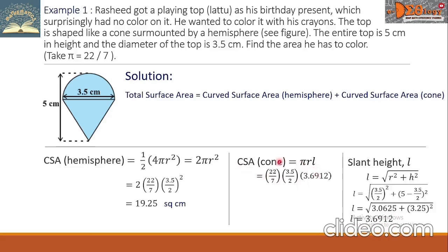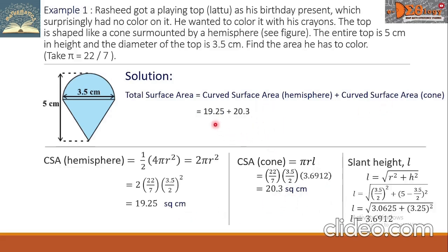So the CSA of the cone is (22/7) × (3.5/2) × 3.6912, giving a final answer of 20.3 square centimeters. Adding the two areas: 19.25 plus 20.3 gives a total of approximately 39.55 square centimeters.